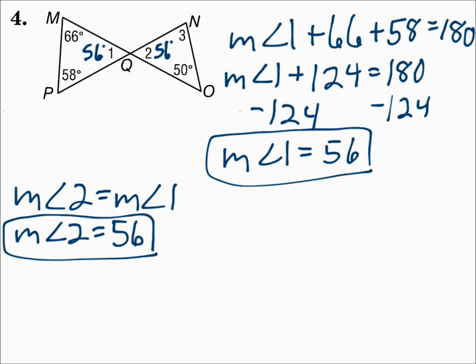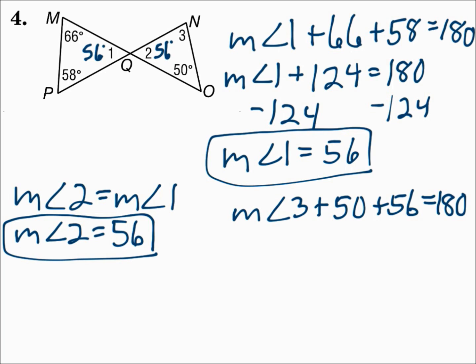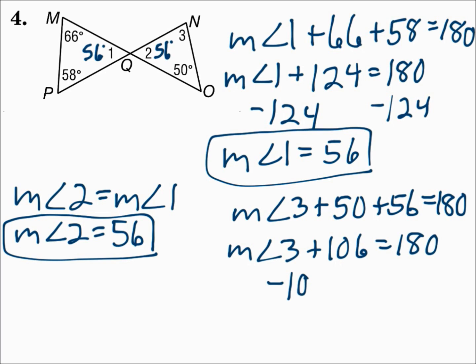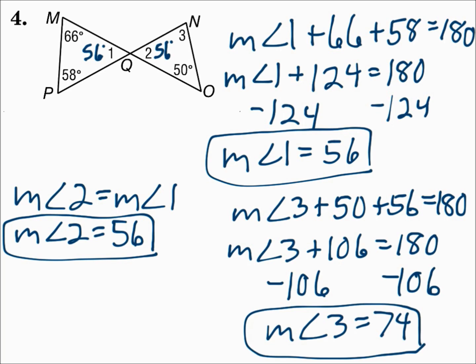Now on the right-hand triangle, you know two of the angles: angle three + 50 + 56 = 180. 50 + 56 = 106, so subtracting 106 from each side gives angle three = 74. Remember, the three angles of a triangle add up to 180, and vertical angles are congruent.